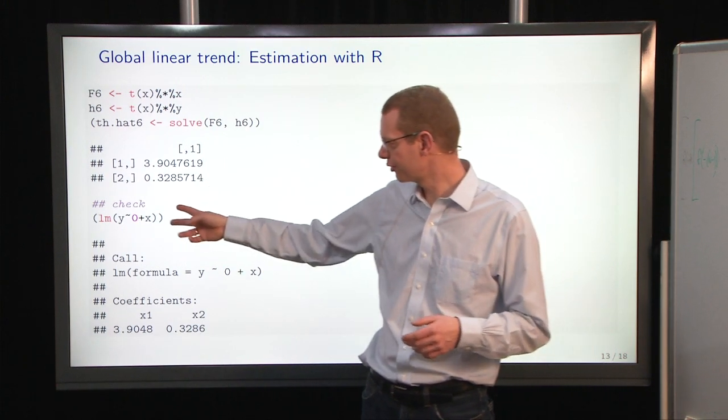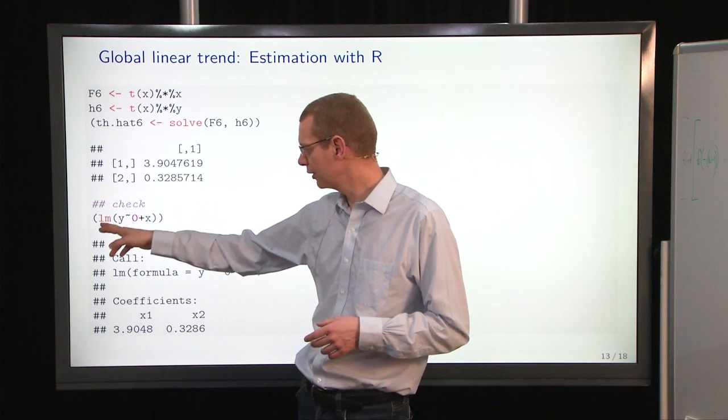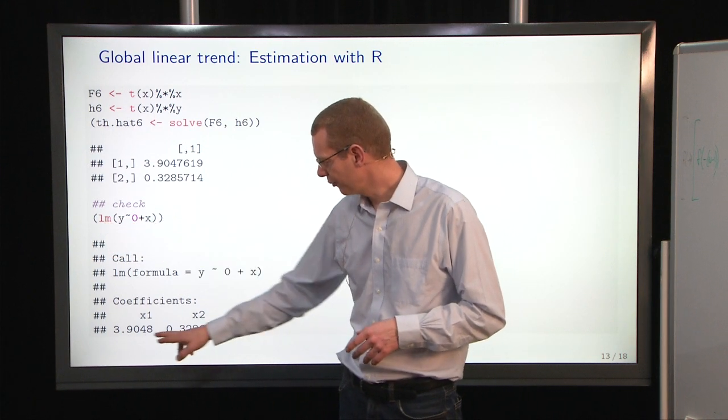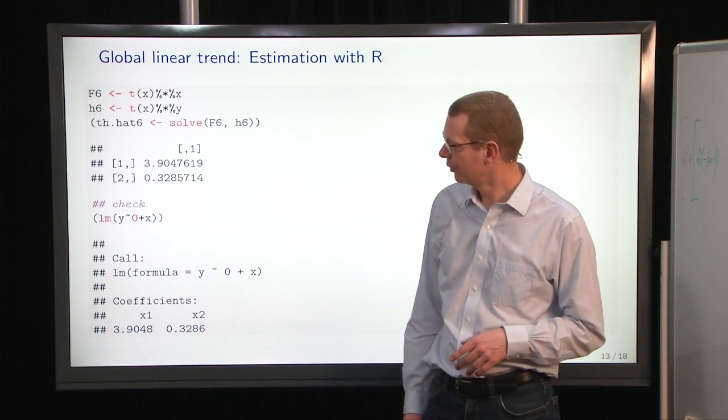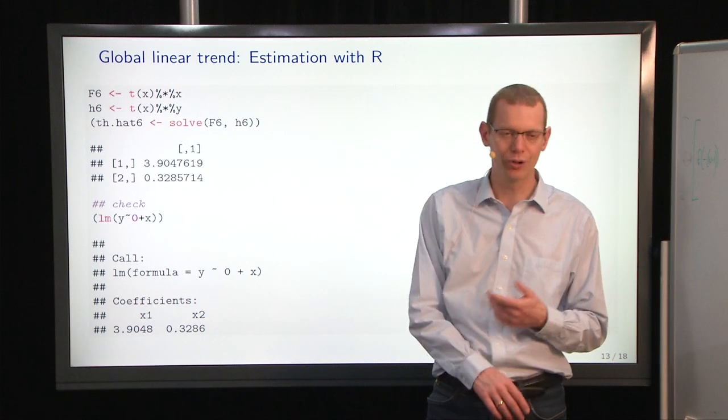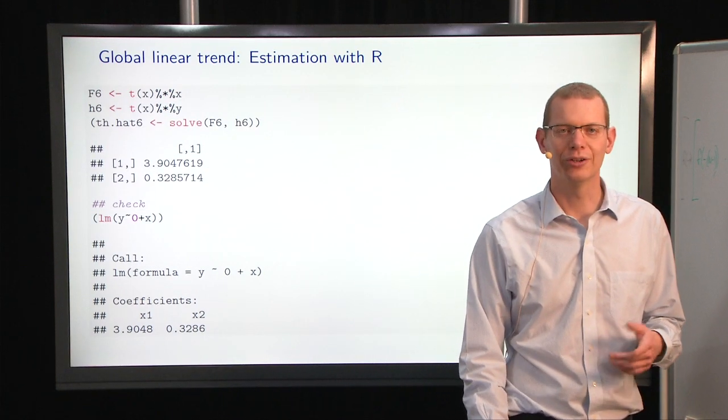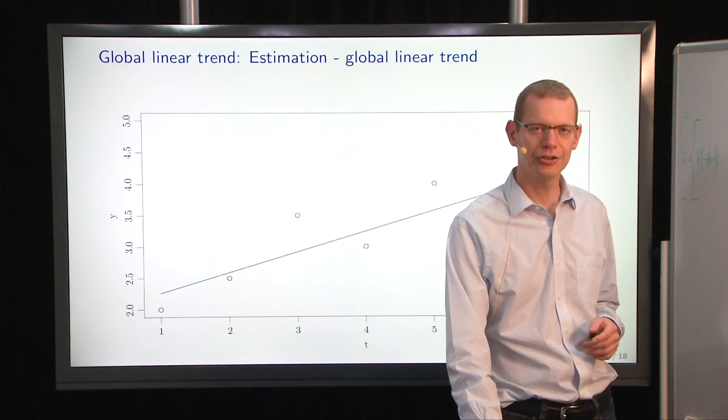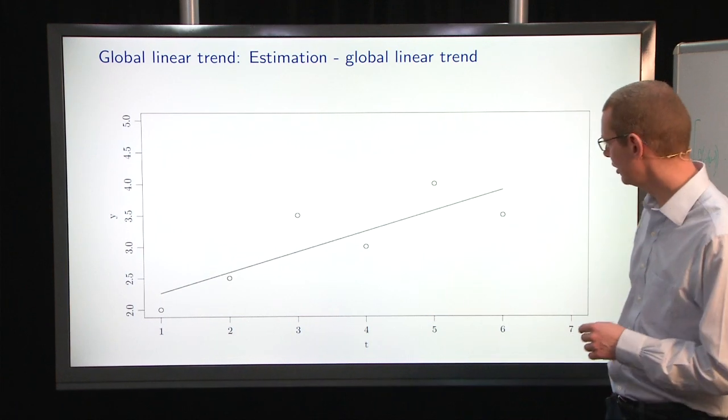Get this estimate here. And just for reference, let's try to use the linear model function in R, lm, and we see that we get the exact same observations, just have some more digits up here. So we're happy. Let's just plot our estimate here.